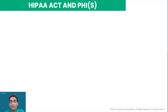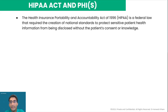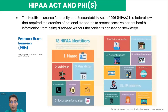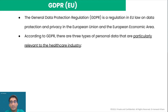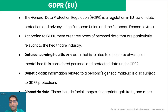Talking about regulations, there is an act called HIPAA — the Health Insurance Portability and Accountability Act — a federal law that requires the creation of national standards to protect sensitive patient health information, also called PHI, from being disclosed without the patient's consent or knowledge. There are 18 protected health identifiers like name, address, and social security number that need to be removed to anonymize data when it is shared for developing AI models, with strict penalties for non-compliance. A similar regulation in the EU is GDPR — the General Data Protection Regulation — which applies to domains beyond healthcare as well. According to GDPR, three types of personal data are particularly relevant to healthcare: data concerning health, genetic data, and biometric data, all of which must be protected.